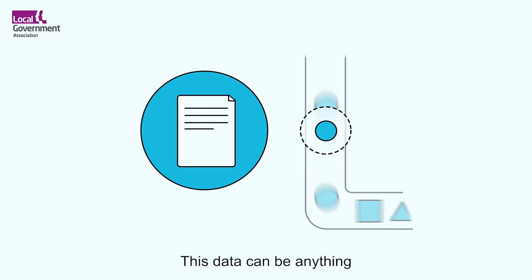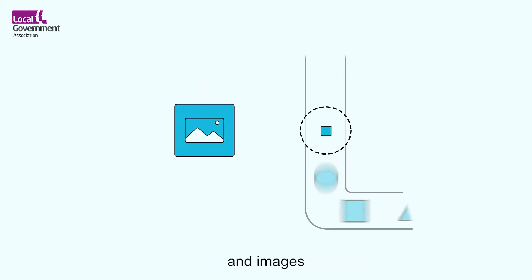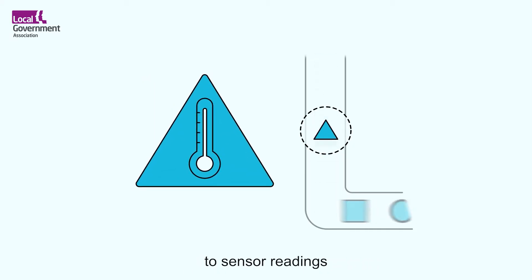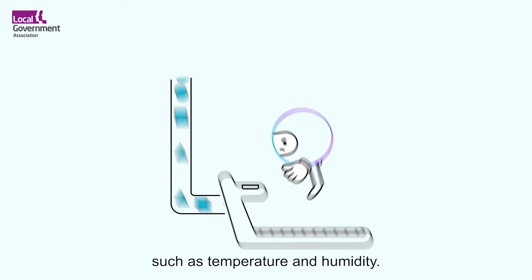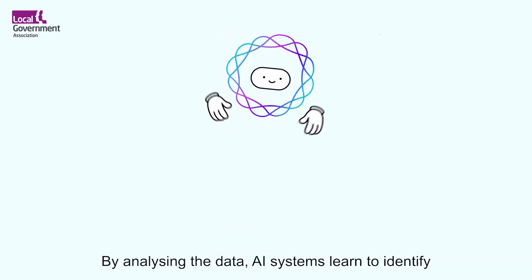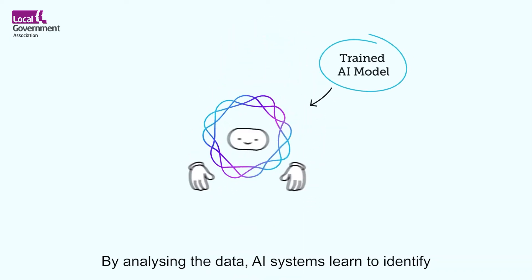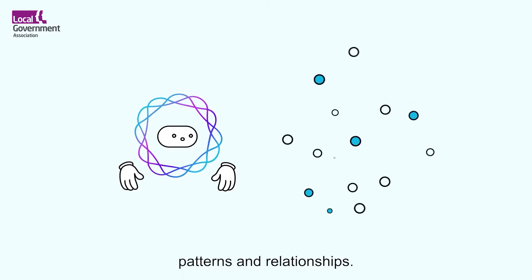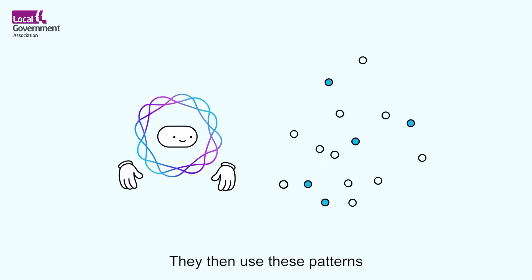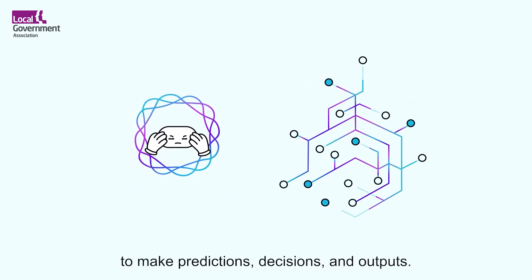This data can be anything from text documents and images to sensor readings such as temperature and humidity. By analysing the data, AI systems learn to identify patterns and relationships. They then use these patterns to make predictions, decisions and outputs.